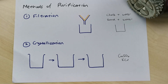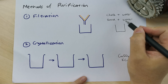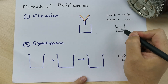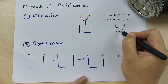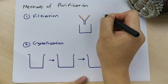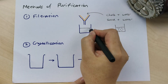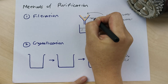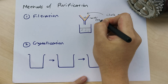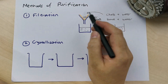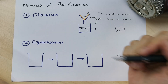The most common method is filtration. Filtration is used to separate a mixture of chalk and water, or sand and water. If you have water with sand in it, you just pour it through a filter — the water passes through and the sand or chalk stays behind. That's how you separate solid from liquid.